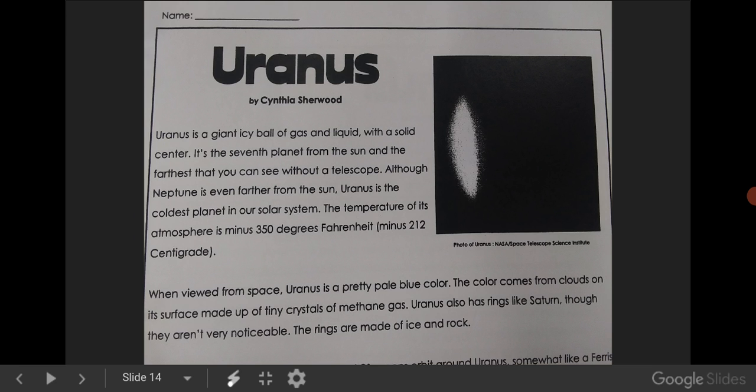When viewed from space, Uranus is a pretty pale blue color. The color comes from clouds on the surface made up of tiny crystals of methane gas. Uranus also has rings like Saturn, though they aren't very noticeable. The rings are made of ice and rock.